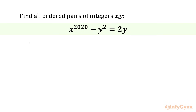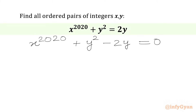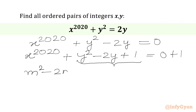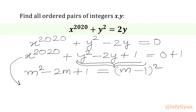We can write our equation as x power 2020 plus y squared minus 2y equals 0. Now we are going to add 1 to both sides, giving x power 2020 plus y squared minus 2y plus 1 equals 1. From these three terms we can form a perfect square using the formula m squared minus 2m plus 1 equals (m minus 1) squared. So we write x power 2020 plus (y minus 1) squared equals 1.